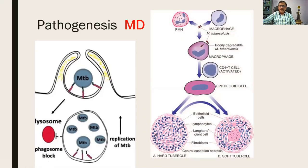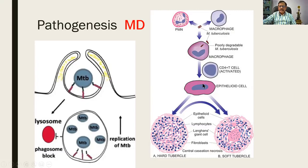The neutrophil is the first line of defense, after which macrophages are attracted and undertake phagocytosis of the organism. The CD4 cell or T helper cell is activated. The macrophage is then converted into an epithelioid cell — a modified macrophage with very little phagocytic activity. These cells aggregate together, pale epithelioid cells in the center surrounded by lymphocytes, forming a structure called a granuloma.